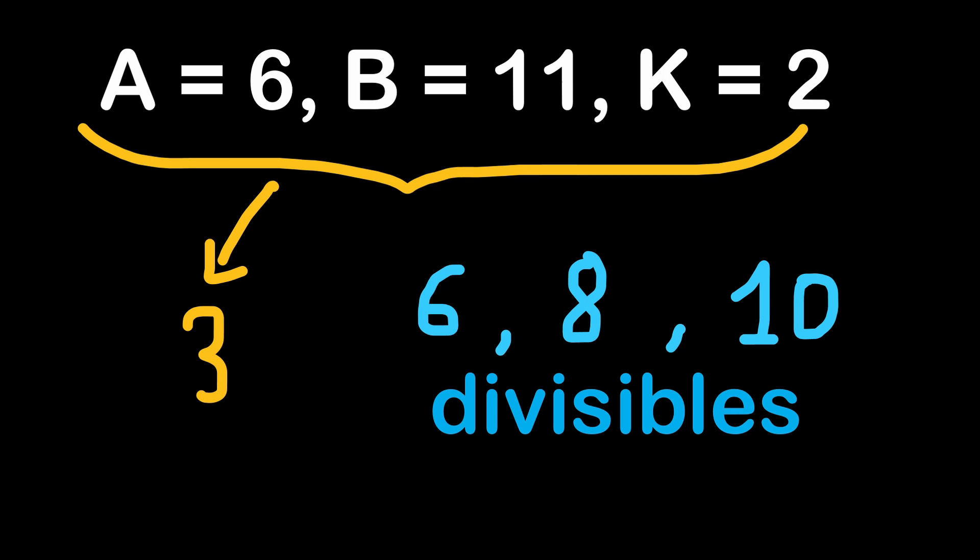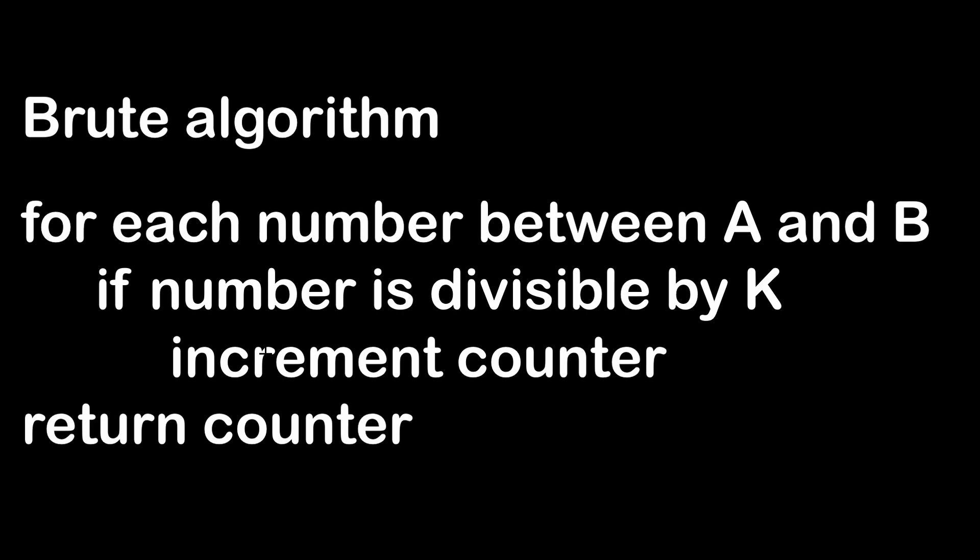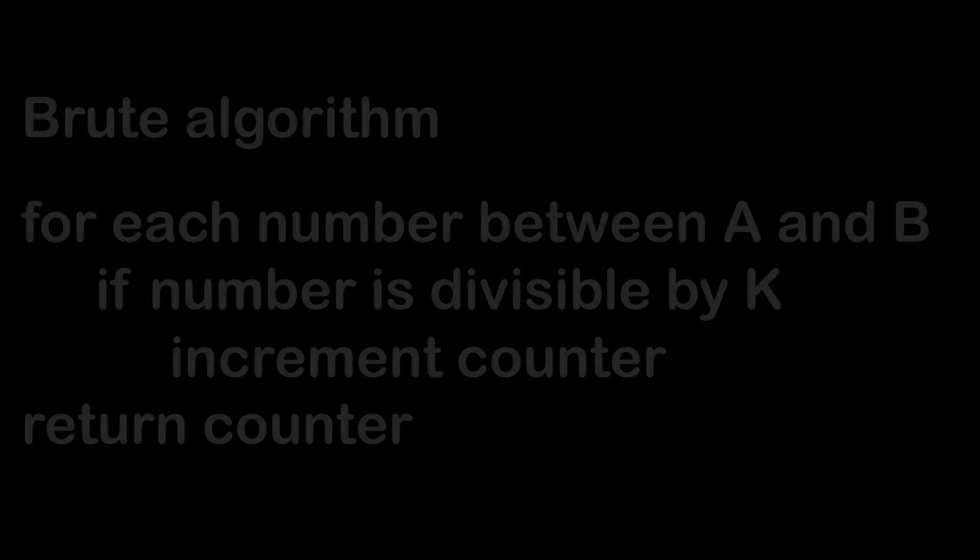At first this problem doesn't look very hard to solve. It's even looking very easy. And this is mainly because the brute algorithm does a good job finding the correct answers. So if we say for each number between A and B we can test if the number is divisible by K, meaning if this number modulus K is equal to 0, and if it is the case we increment a counter. And when I finish testing all the numbers between A and B I'm simply returning the counter as a result. You will get a correct answer. However it's not efficient enough to score 100% on the Codility website.